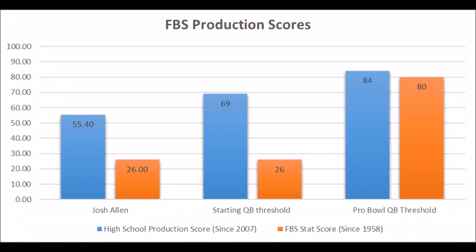When you look at Josh Allen's FBS production scores and high school production score, he had a 55.40 high school production score, which unfortunately doesn't meet the minimum threshold for long-term starting quarterbacks at the NFL level since the 2007 NFL Draft Class, nor does he hit the Pro Bowl quarterback threshold of 84 or higher. That threshold includes guys like Cam Newton, Russell Wilson, Andrew Luck, Drew Brees, Matt Ryan — all those quarterbacks hit that 84 or higher area in high school production, whereas Josh Allen only has a 55.40 out of 100.